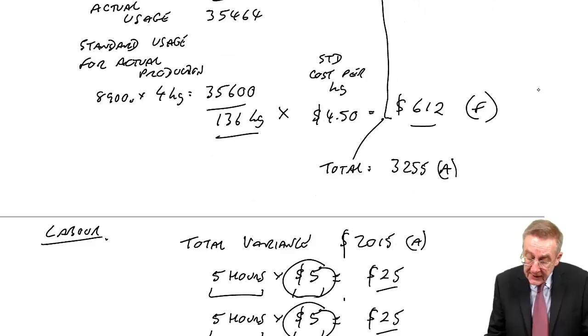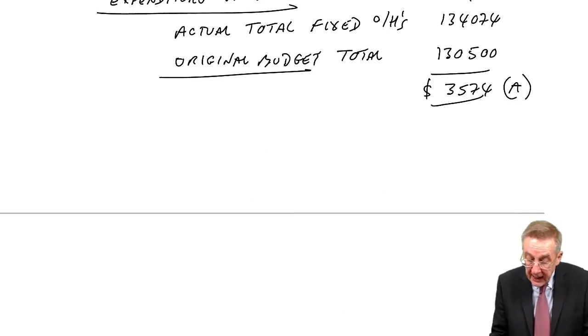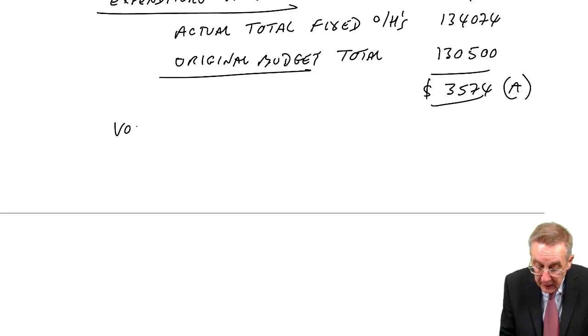And so this, in some ways, is almost a cheat. To explain that, we have what we call the volume variance.